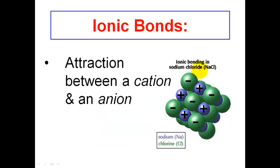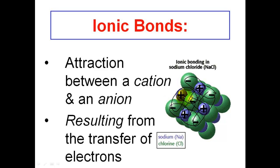As a review, let's define an ionic bond. An ionic bond is an attraction between a cation and an anion. Examining this picture, I can see ionic bonds in multiple directions — these are all attractions between cations and anions. An ionic bond results from the transfer of electrons.